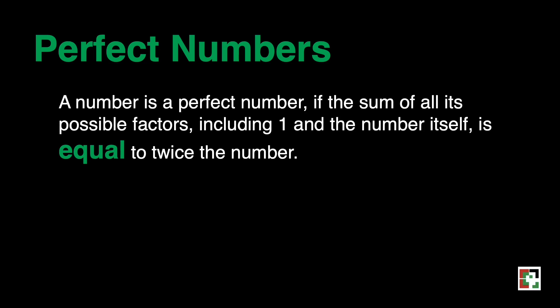Let us have perfect numbers. A number is a perfect number if the sum of all its possible factors including 1 and the number itself is equal to twice the number.